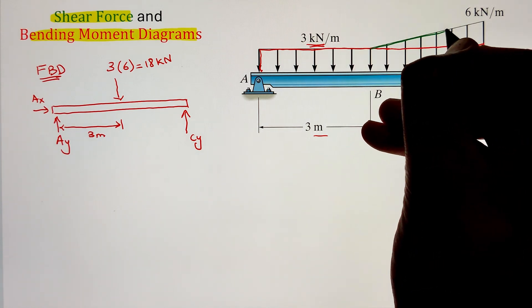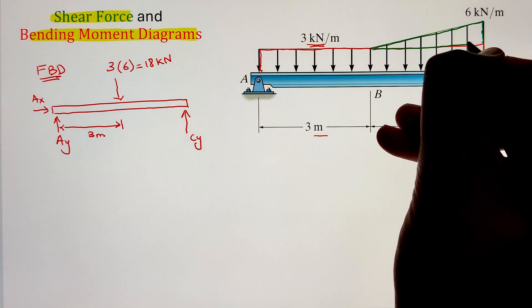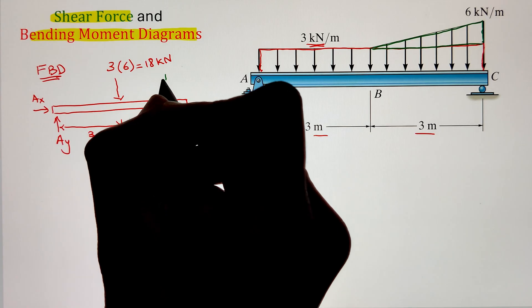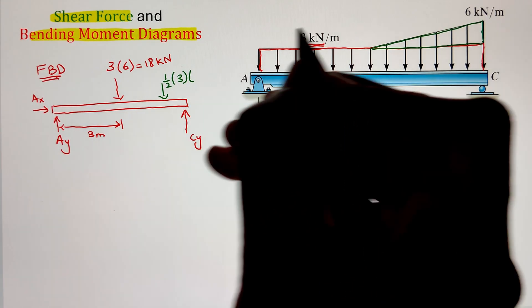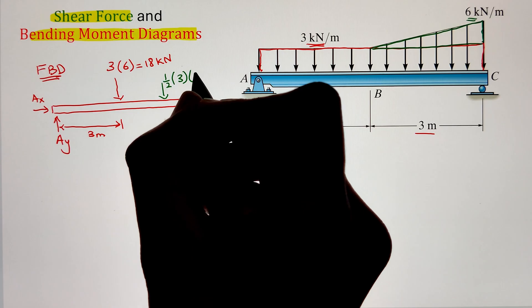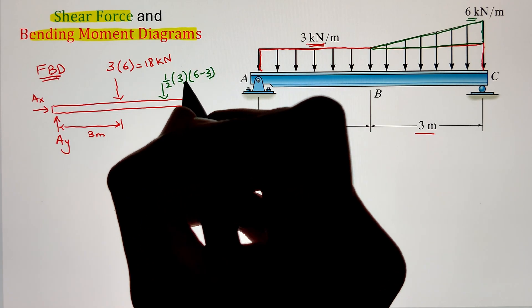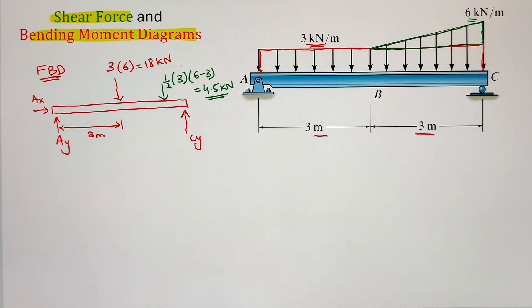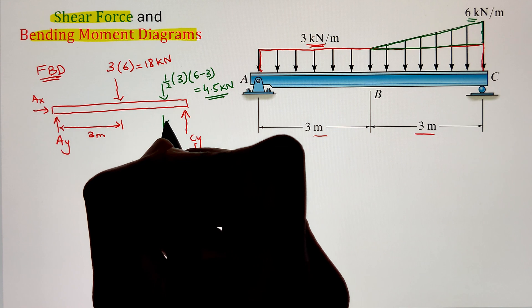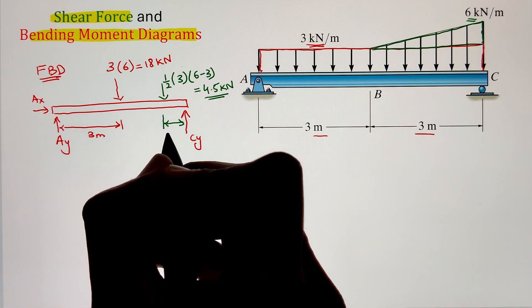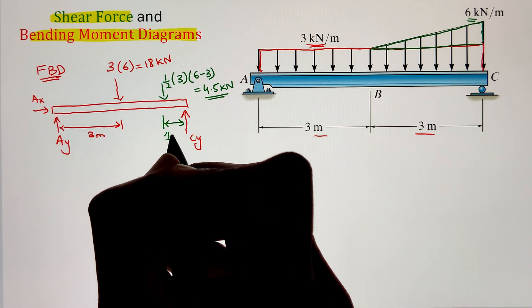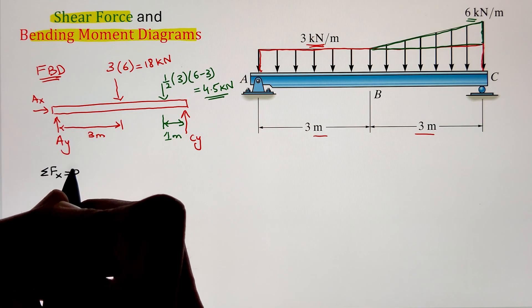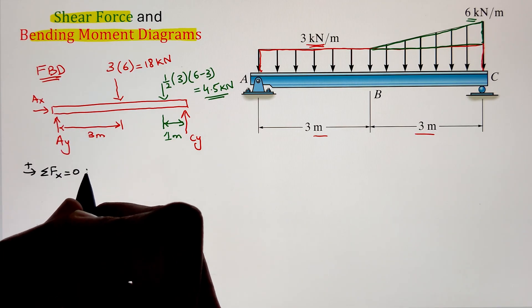Next we have a triangular distributive loading, which we also convert to a point load by calculating the area of the triangle: half times base times altitude. The base is 3 meters and the height is 6 minus 3 = 3, giving a point load of 4.5 kilonewtons. This acts at the centroid of the triangle, which is one-third from the higher end — 1 meter from point C.